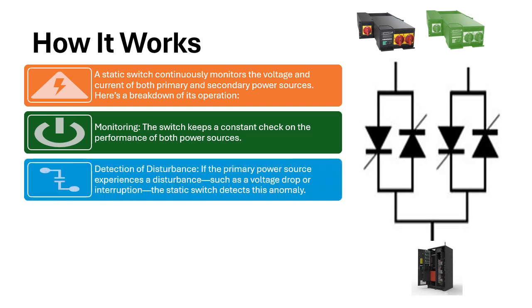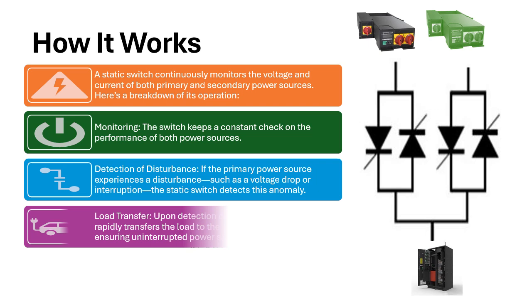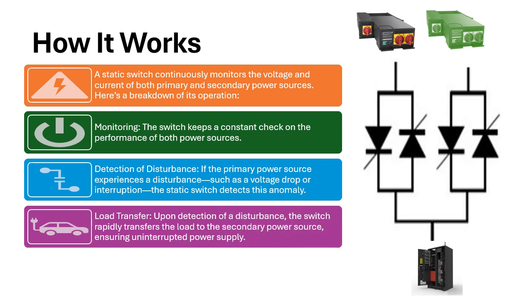Detection of Disturbance: If the primary power source experiences a disturbance, such as a voltage drop or interruption, the static switch detects this anomaly. Load Transfer: Upon detection of a disturbance, the switch rapidly transfers the load to the secondary power source, ensuring uninterrupted power supply.